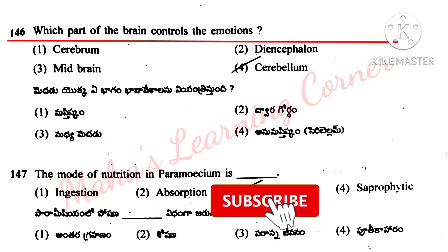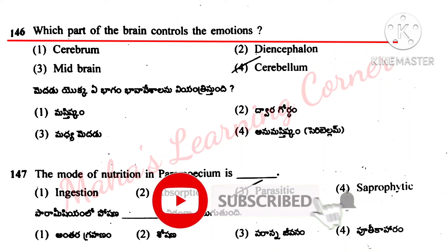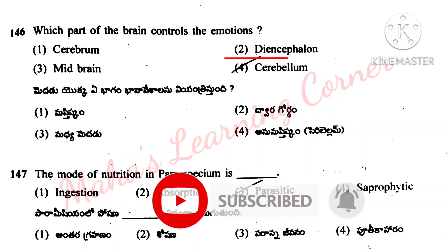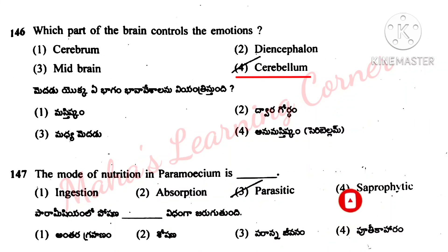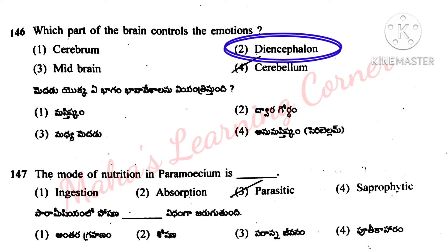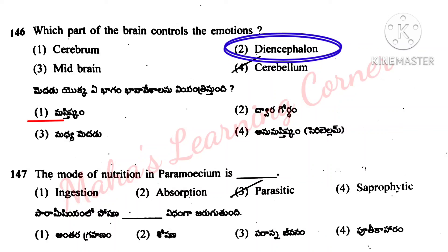Which part of the brain controls the emotions? Options: Cerebrum, Diencephalon, Midbrain, Cerebellum. Correct answer option 2: Diencephalon.